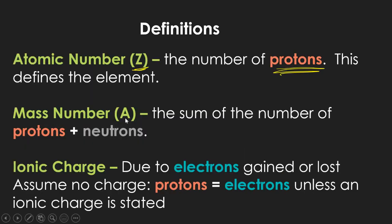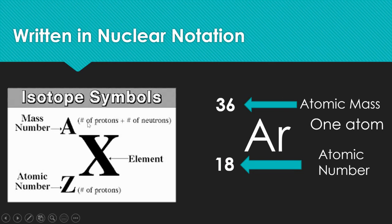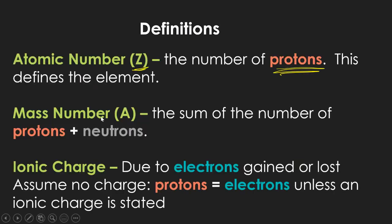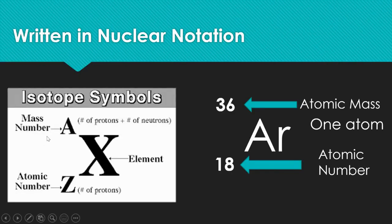Nuclear notation uses the symbol A for mass number — another odd choice since there's no A in 'mass number.' The mass number, which is protons plus neutrons, goes up top. The atomic number, which is just the number of protons, goes down low. So in nuclear notation, the larger number is on top and the smaller is on the bottom.